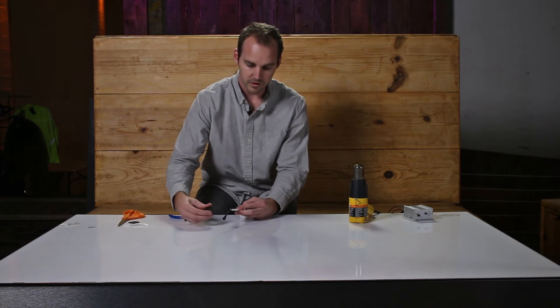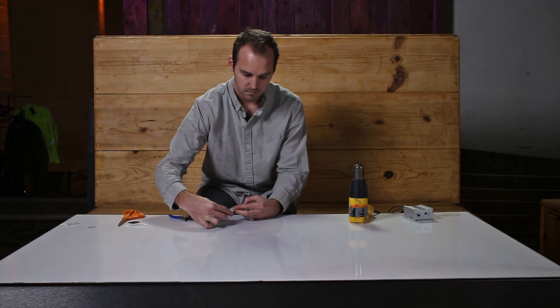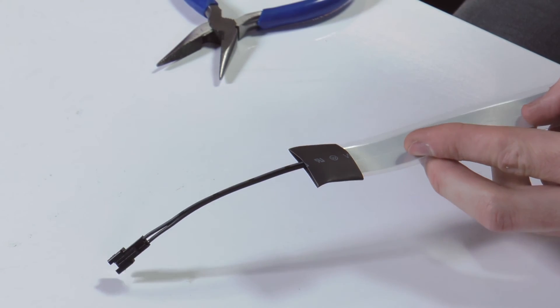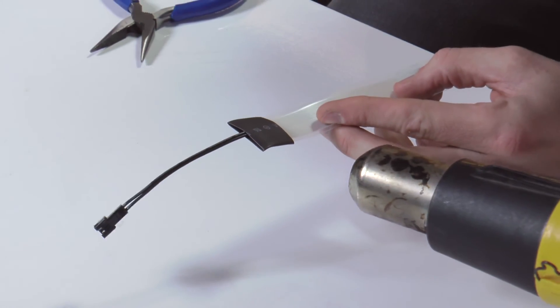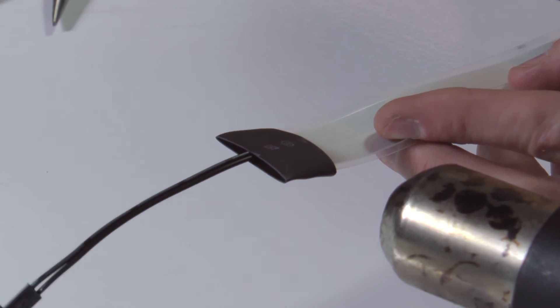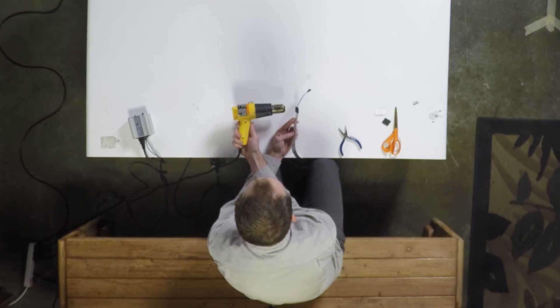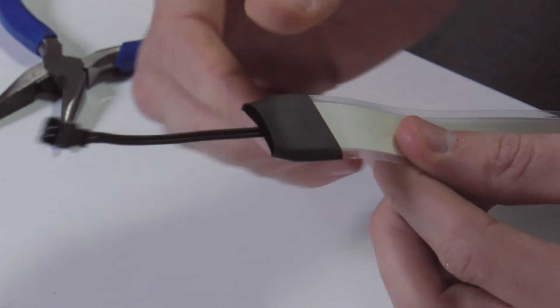Next we're going to place heat shrink tubing over the top. Take our heat gun and at this point you should have a nice connection.